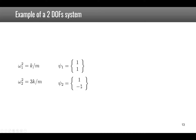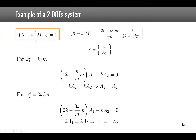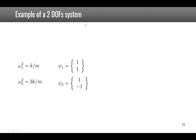For the second mode, substituting omega_2-squared = 3k/m into the first line gives 2k minus 3k times a1 minus k times a2 equals zero, leading to a1 equals minus a2. The two mode shapes can be represented as psi_1 = [1, 1] and psi_2 = [1, -1]. Note that you could also use [2, 2] or any scalar multiple, since mode shapes have no unique scaling.